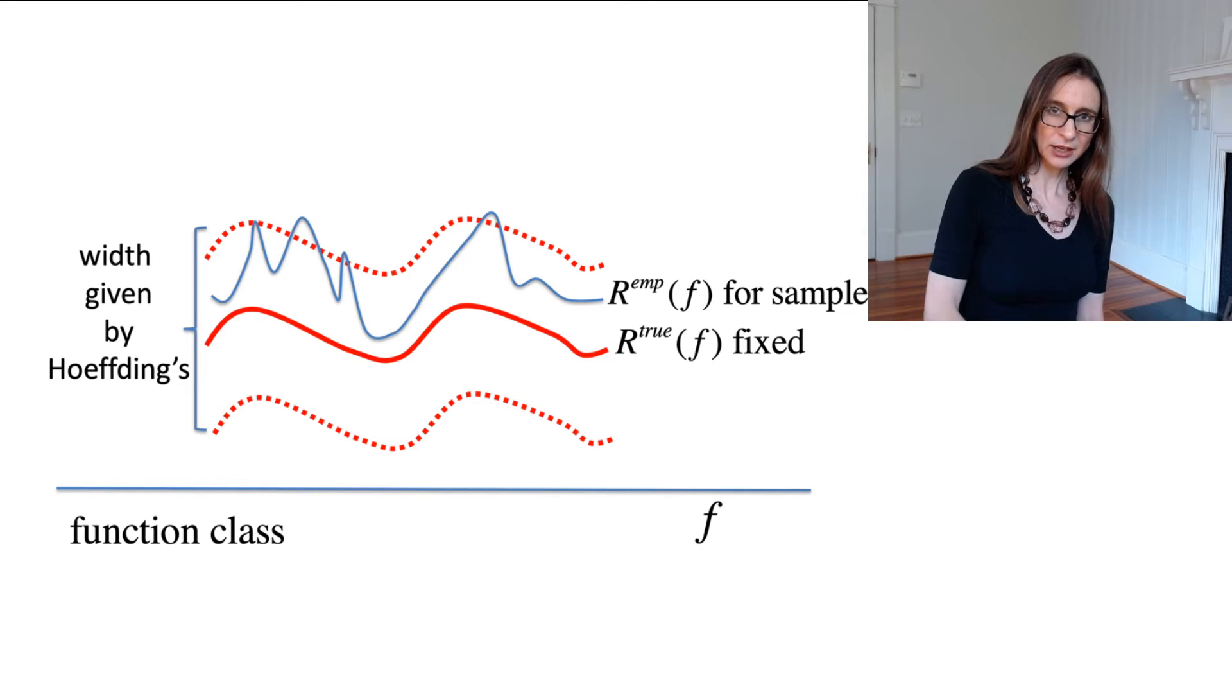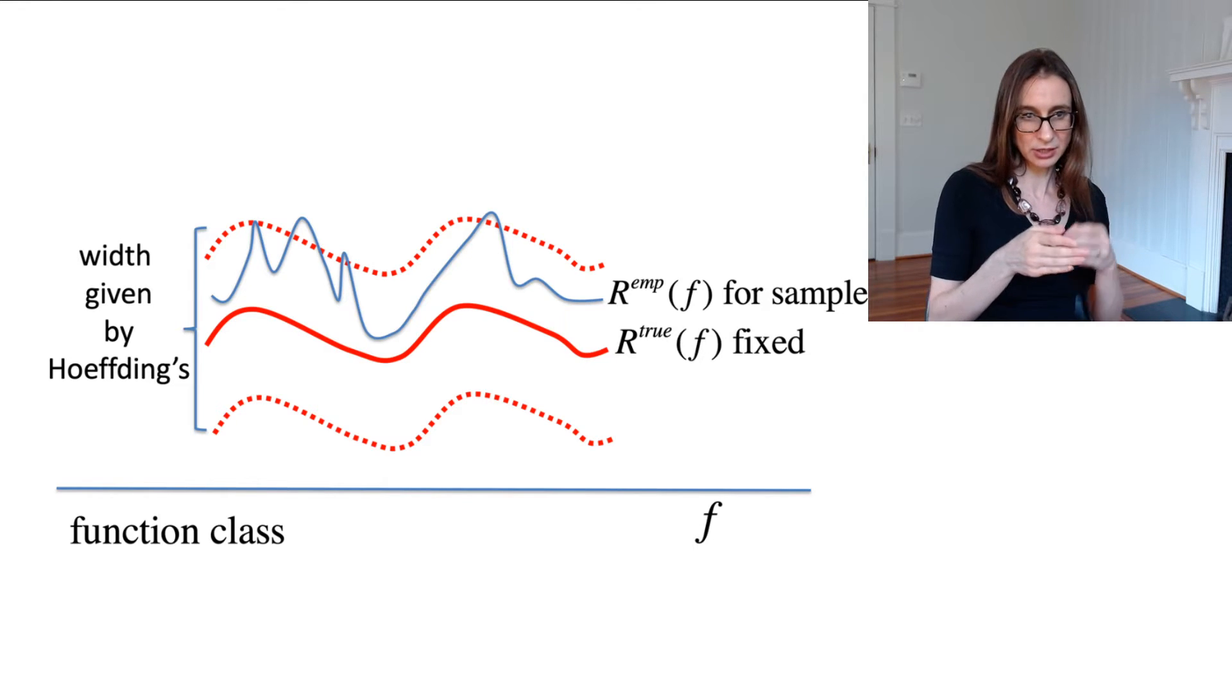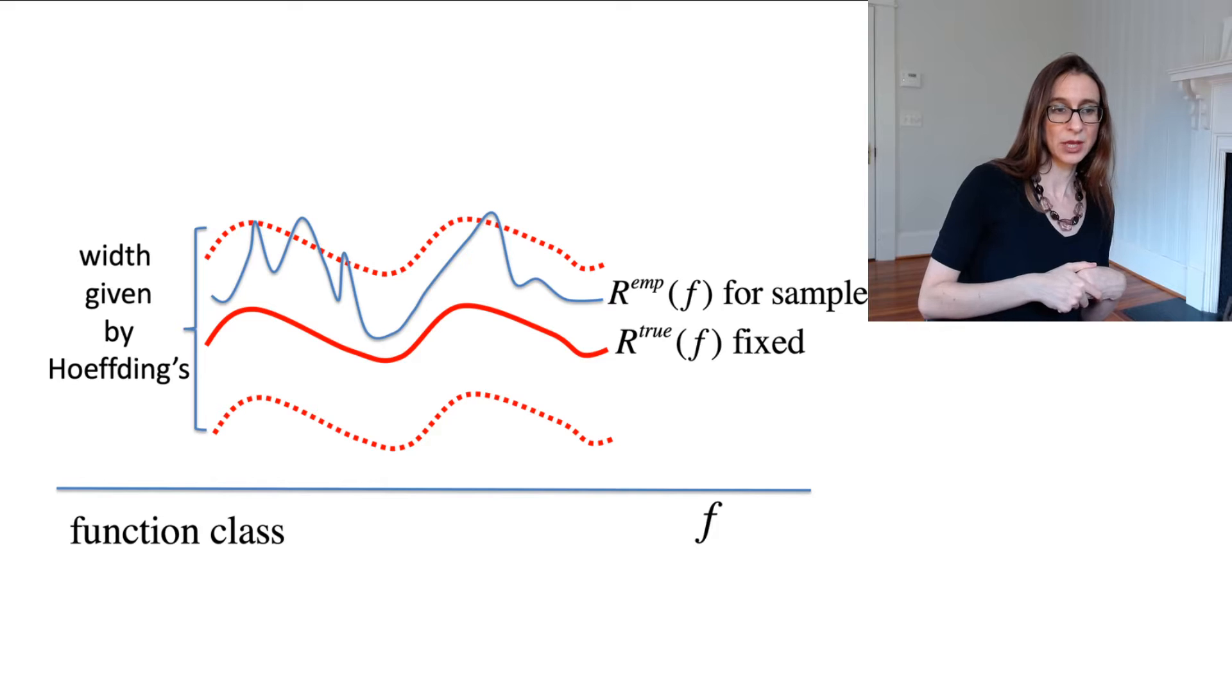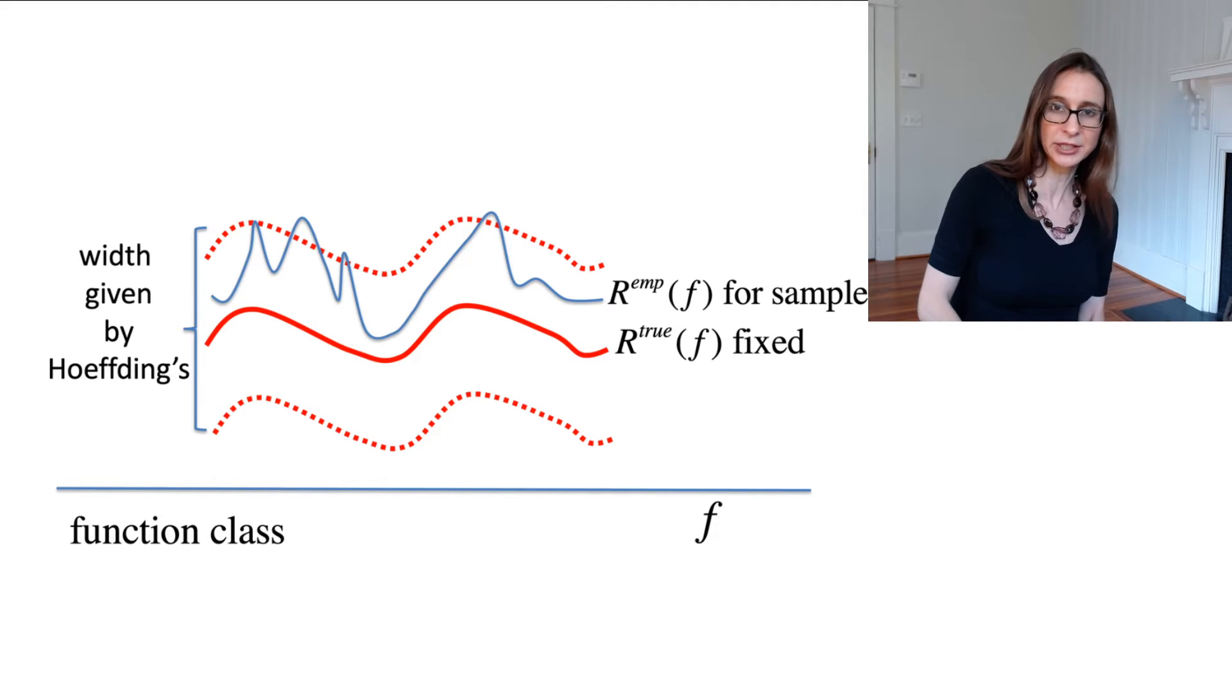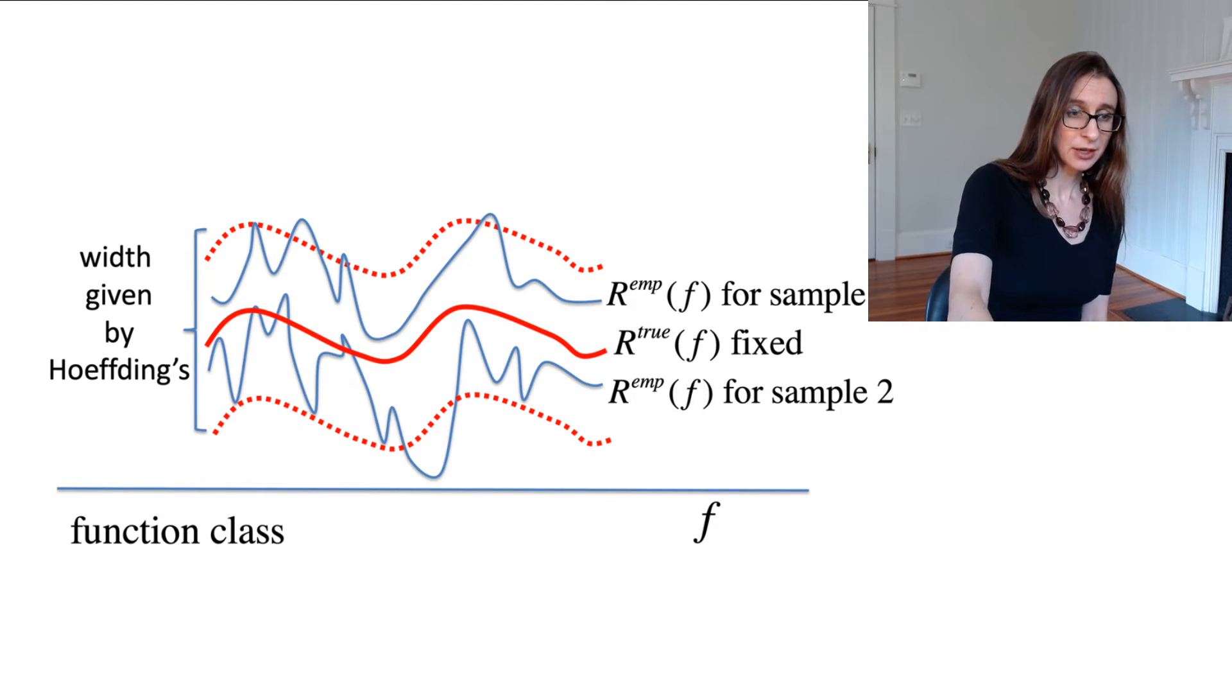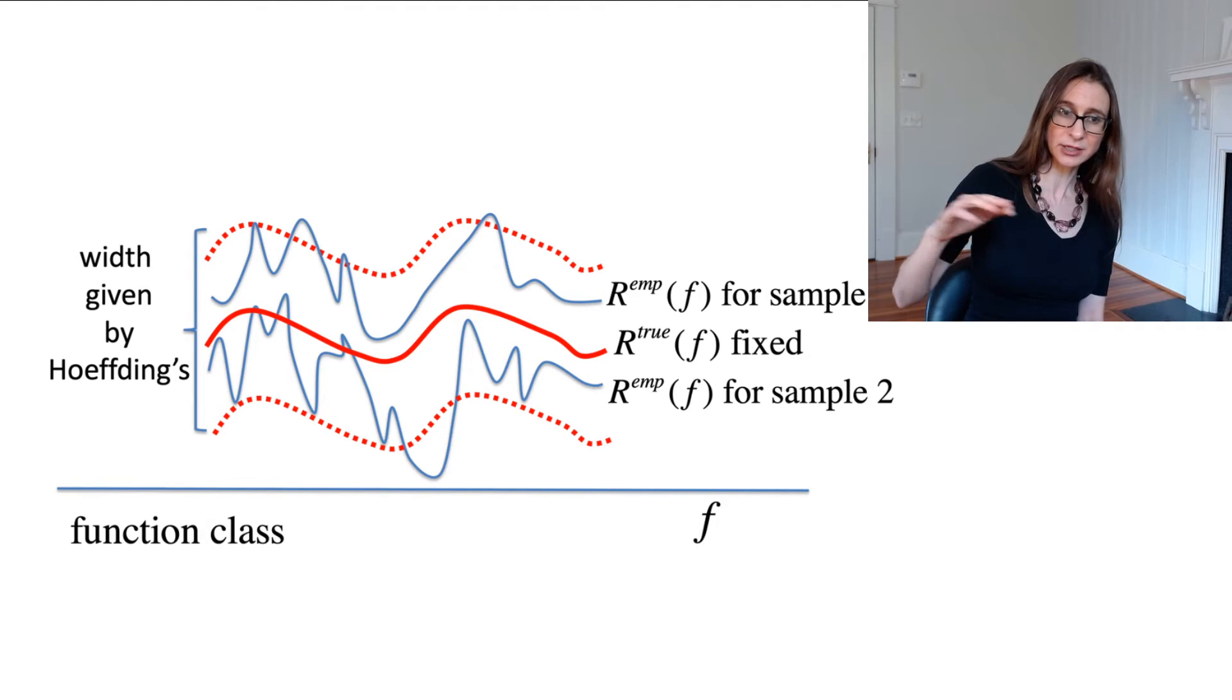So if I pick a data set at random, I can plot the empirical risk for the data set, and it looks like this. So again, Hoeffding's inequality says that given a function, most of the data sets are good. So you would expect to see that most of the time, the empirical risk is fairly close to the true risk, like I've drawn it. I mean, occasionally it pops out, right? Hoeffding's inequality allows for a probability of delta of that happening. But most of the time, the empirical risk and the true risk are close. And I could do this for any number of data sets I want to. This is for another data set that I chose randomly. And again, most of the time, the empirical risk and true risk are close.